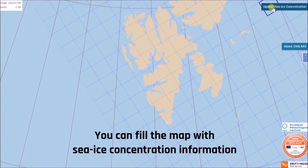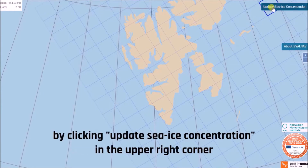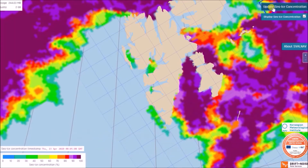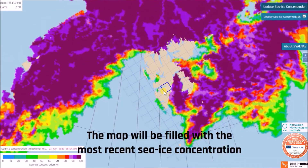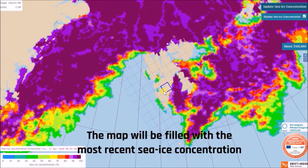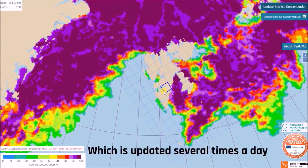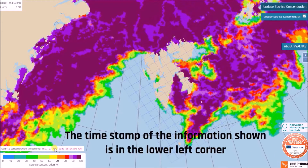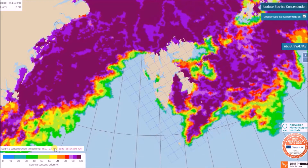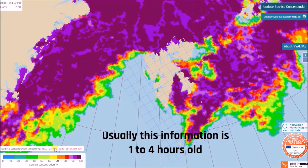You can fill the map with CIS concentration information by clicking 'Update CIS Concentration' in the upper right corner. The map will be filled with satellite-derived CIS concentration, which is updated several times a day. The time step of the information shown is in the lower left corner — usually this is information 1 to 4 hours old.